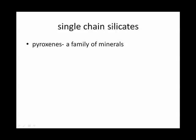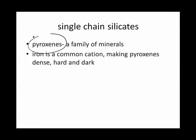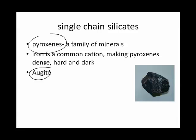One example of a single chain silicate is the family of minerals called the pyroxenes. Pyroxenes tend to contain iron as a cation, making pyroxenes very dense, hard and dark. A very common pyroxene that we'll be seeing a lot of is augite. Augite is this rather boring black rock with definite cleavage planes that is found in basalt.